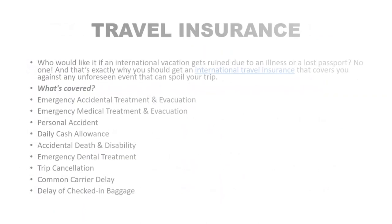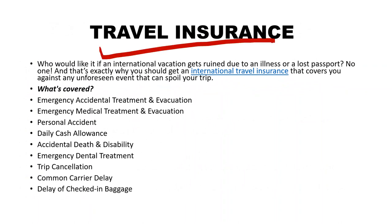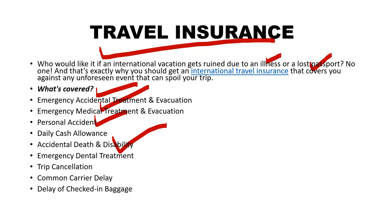Next is travel insurance. When you go on international travel, it is a dream come true, but something unexpected can happen — for example, illness or a lost passport. Travel insurance covers: emergency accidental treatment, accidents during international vacation, daily cash allowance, accidental death and disability, emergency dental treatment, trip cancellation, flight and carrier delay, and delay of checked baggage. This is a newer type of insurance.